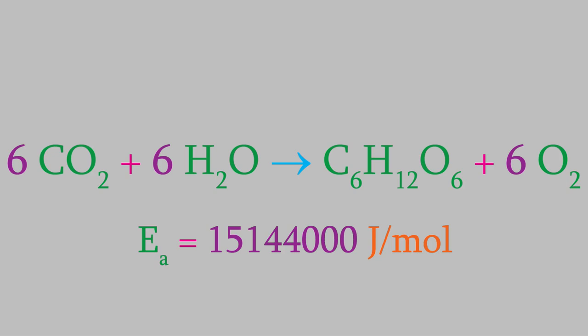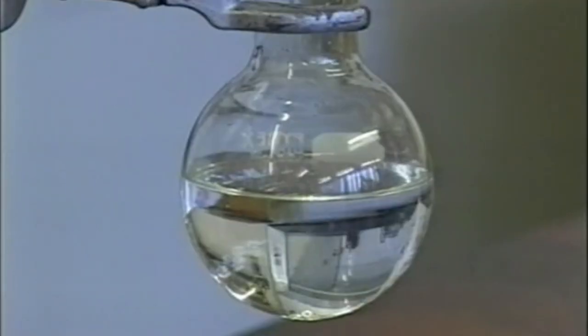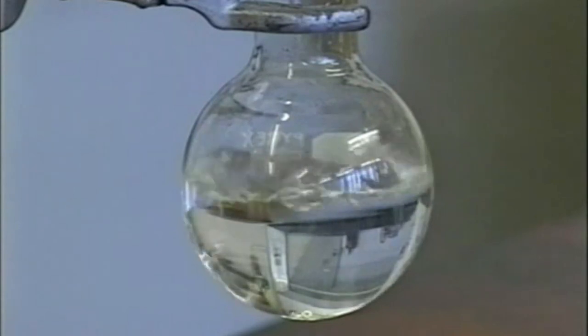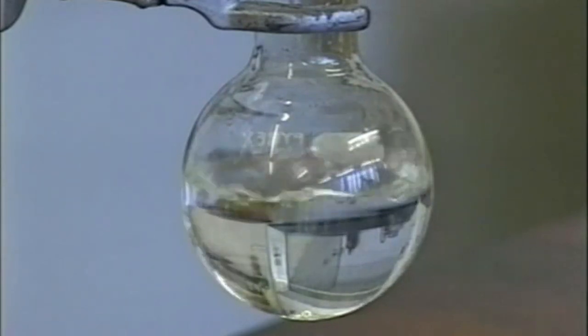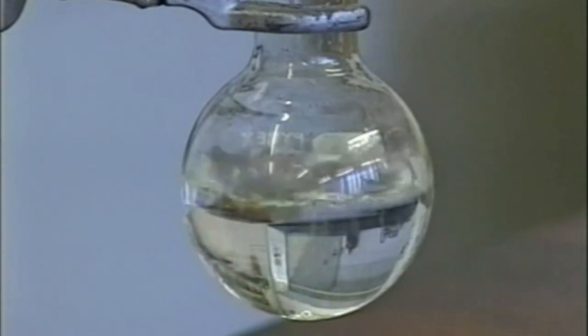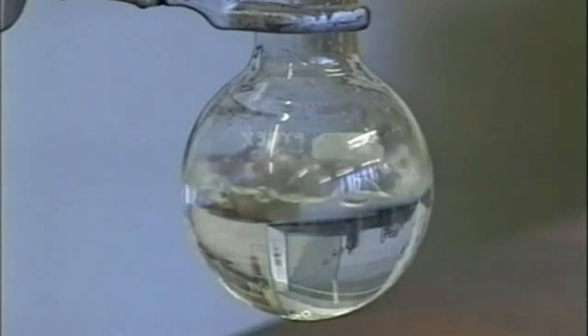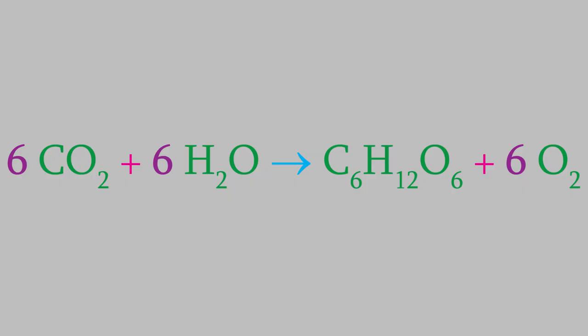You kind of know this already. If you were to bubble CO2 into a beaker of water, you wouldn't expect to see them react to form oxygen and glucose. But we all know that this reaction does happen during photosynthesis. What makes this very slow reaction happen at a reasonable rate? The secret is that many chemical reactions can be made faster using what's called a catalyst.